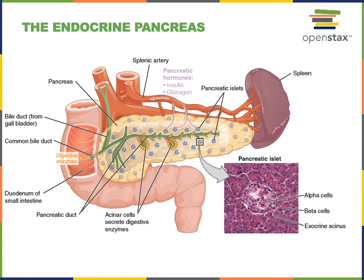Within the pancreatic islets are alpha cells that produce the hormone glucagon, and beta cells that produce the hormone insulin. Together, glucagon and insulin work to help maintain a stable blood glucose concentration.